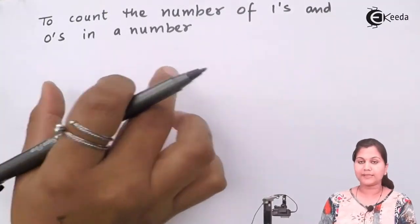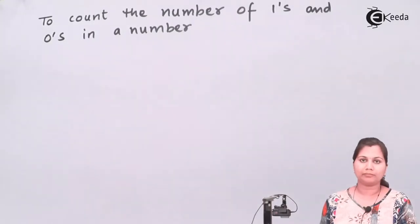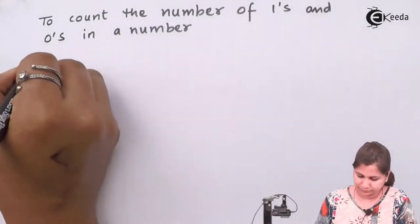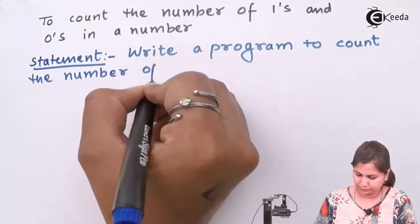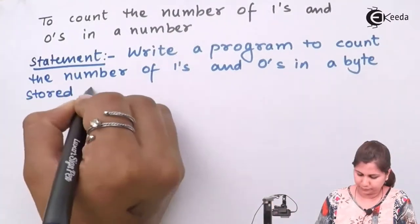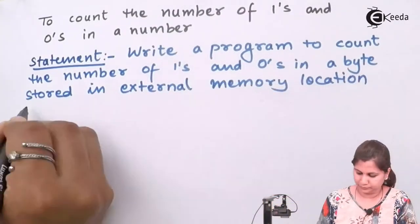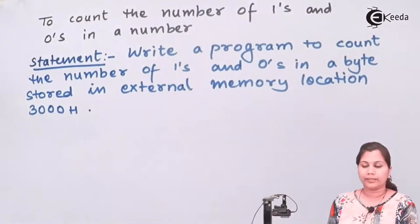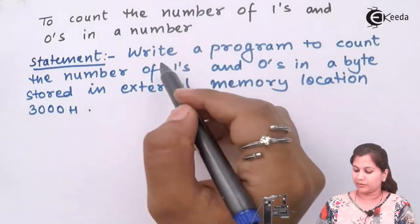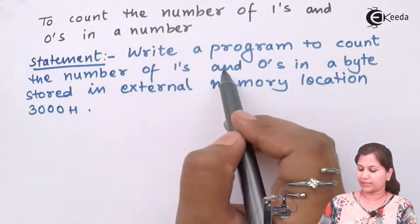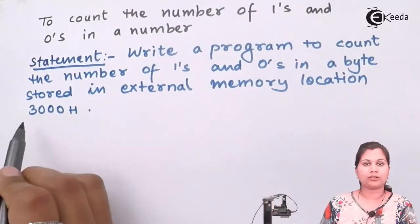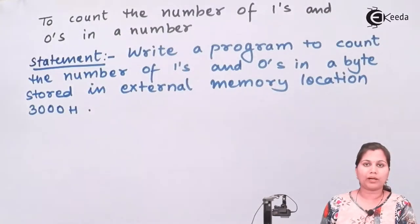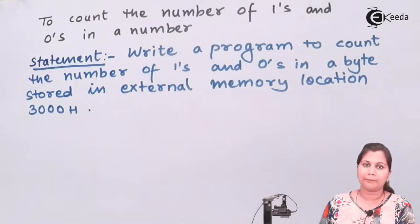To write a program for this problem, let's define the problem statement. The statement is: write a program to count the number of 1s and 0s in a byte which is stored in the external memory location 3000H. We have to write the program in the Assembly language using the instructions of the 8051 microcontroller.